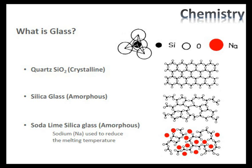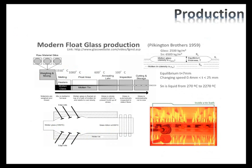Silica glass was then turned into sodalime glass through the inclusion of sodium ions, which reduce the melting temperature and allow glass to be more workable when it is heated up. That is what we see in production today — the glass in your windows is effectively sodalime silica glass.